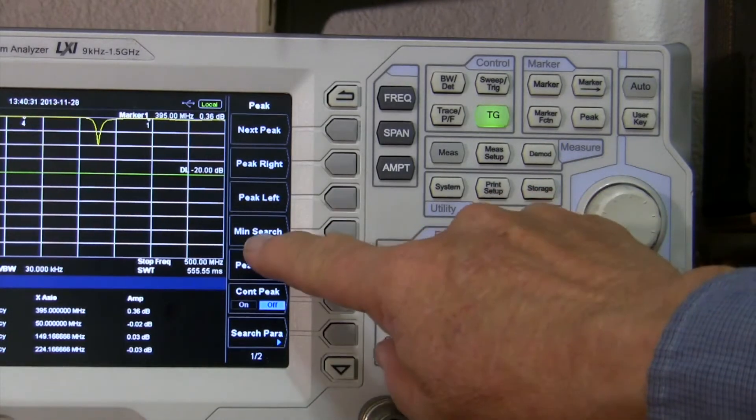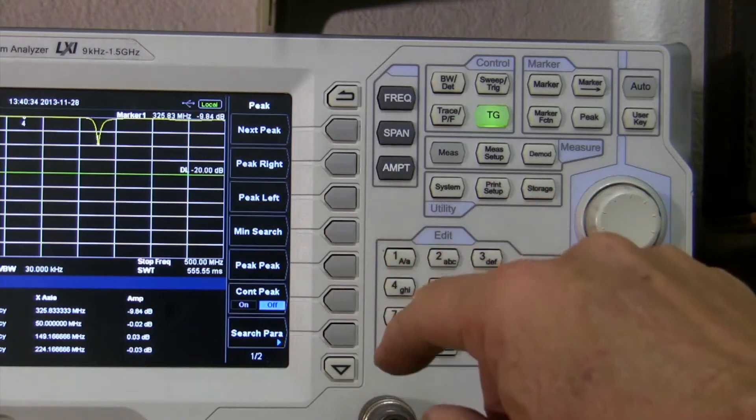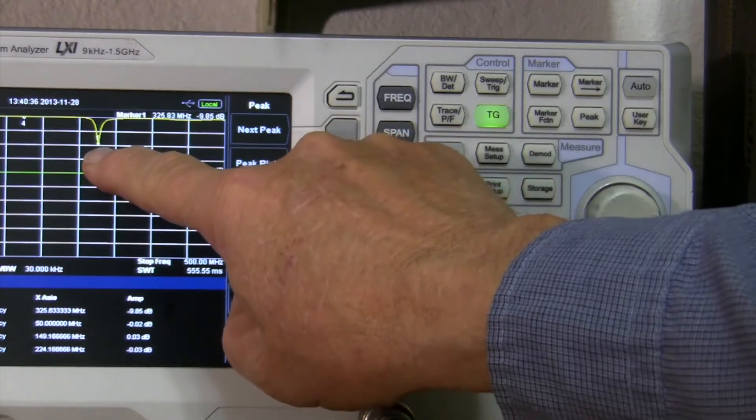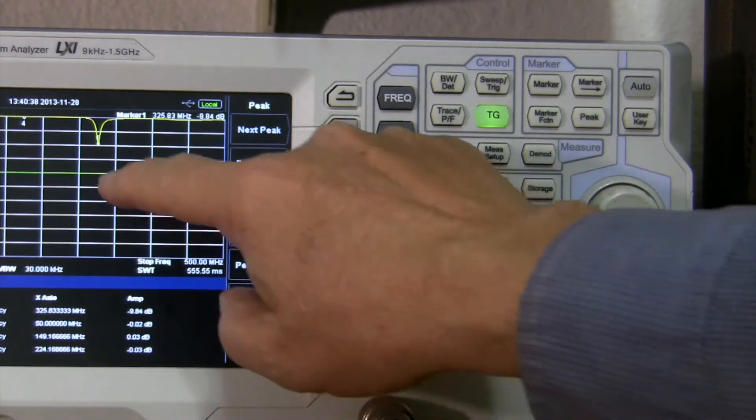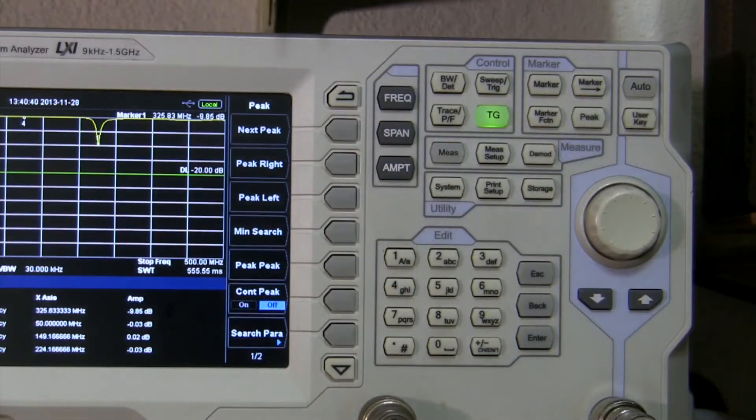Let's get over here so you can see what I'm doing. I'm going to punch up peak, then I'm going to go to minimum search, and it'll find the minimum peak, which is at 9.84 dB down at 3.2583 megahertz.